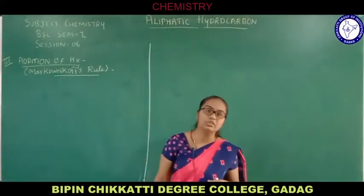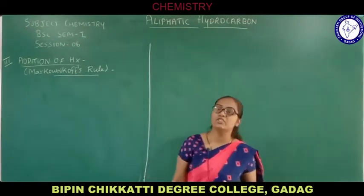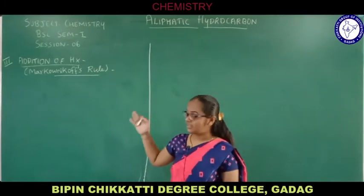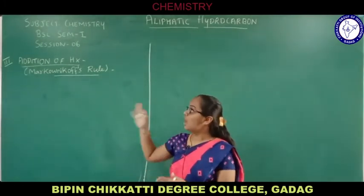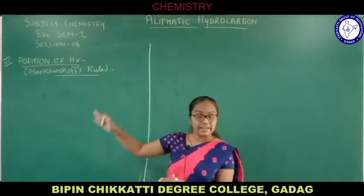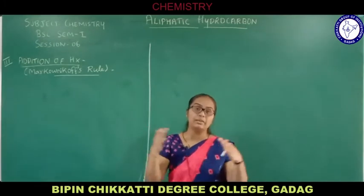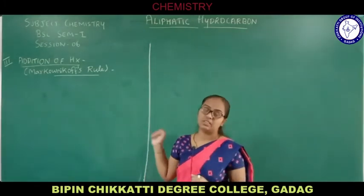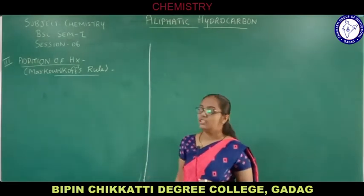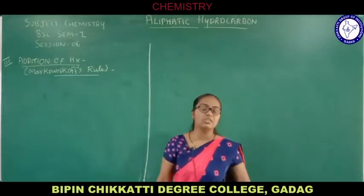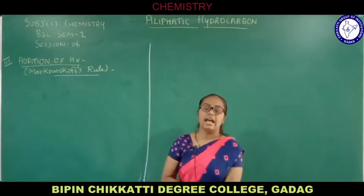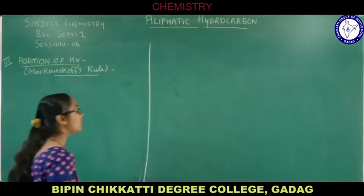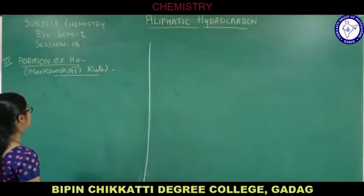This Markovnikov rule you have already studied in year 12 standard. Now we are going to study in more detail how this addition of hydrogen halide will take place towards a reactant called olefin. Let us understand this Markovnikov rule in more detail, and then we will take examples one by one.